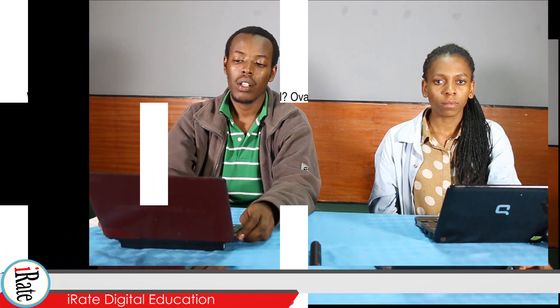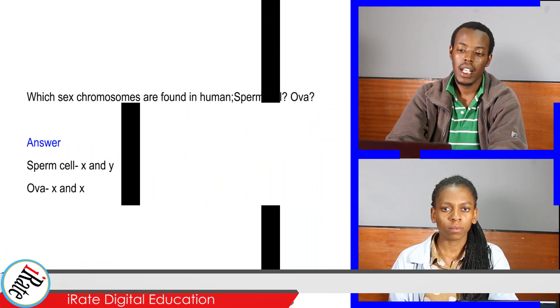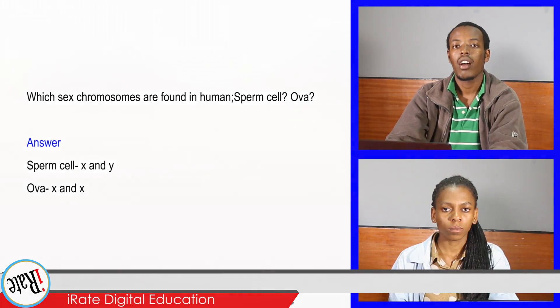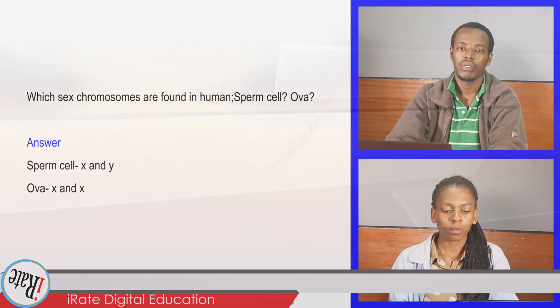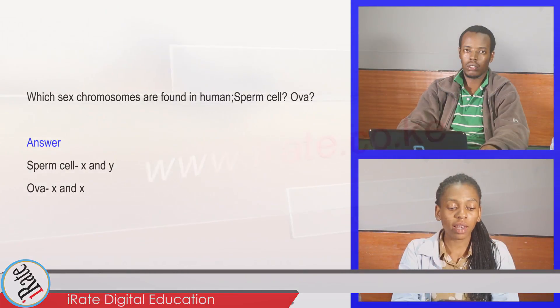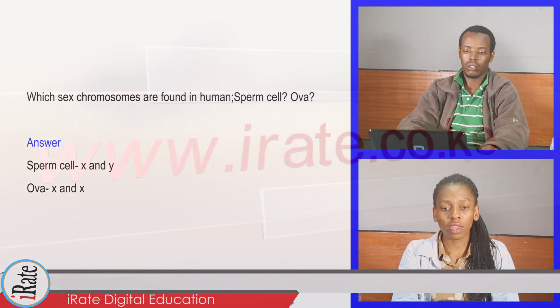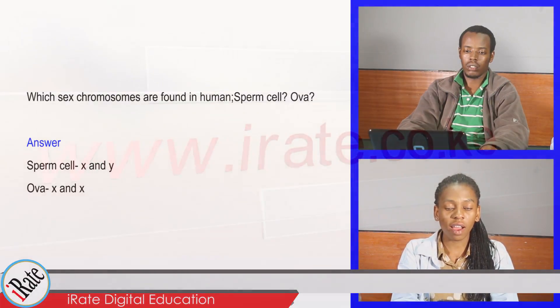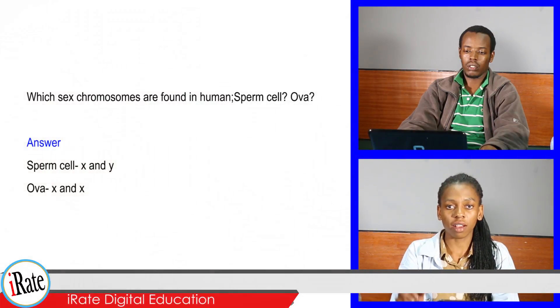Which sex chromosomes are found in humans? In sperm cells: X and Y. In ovum: X and X.